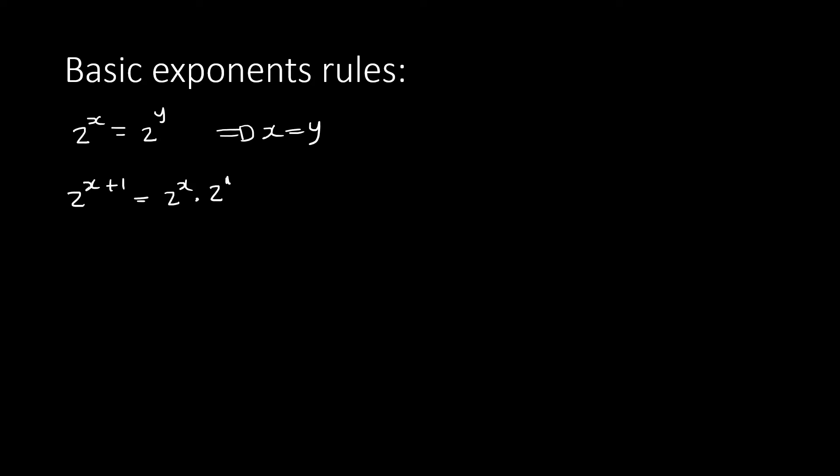Another thing I'd love everyone to know, especially for this chapter: if I have 2^x = 3, we know we cannot make 3 be a base of 2. So the only way to solve this is by applying log or ln.